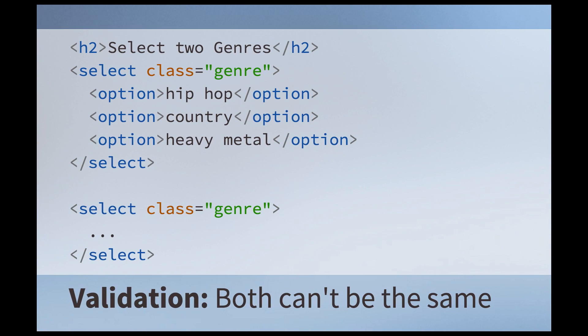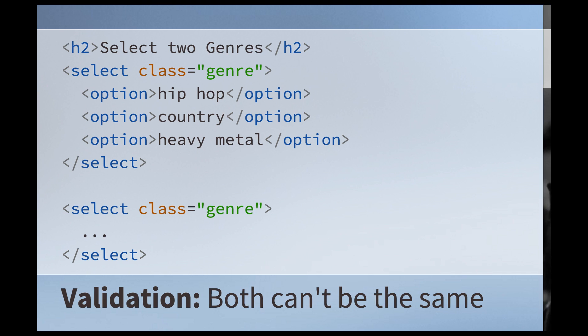Let's take a look at what the UI for this might look like. This might be our DOM — you'd have a 'select two genres' header across the top, with two different dropdowns for selecting the genres. When the user selects these, we're going to validate that they didn't select the same genre for both. Because if you select country and country, that's not funny — that's just a country band.